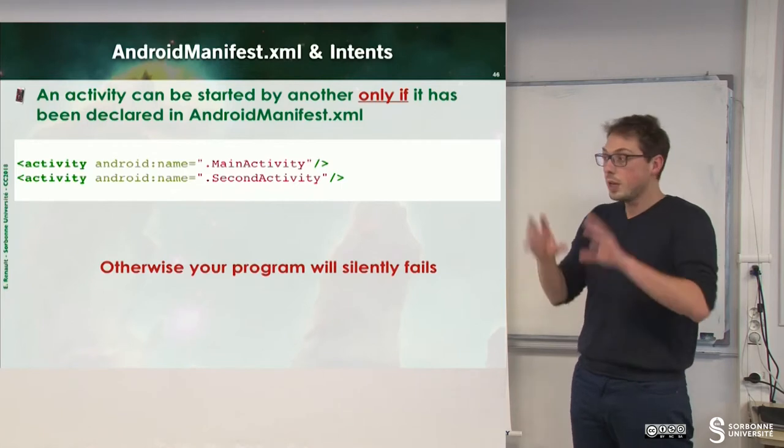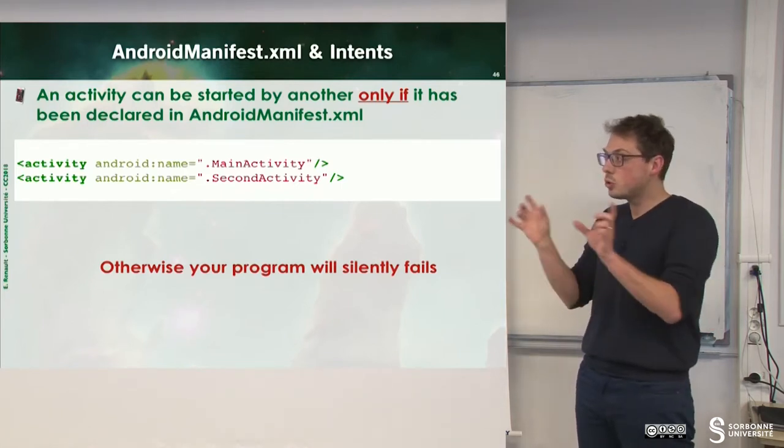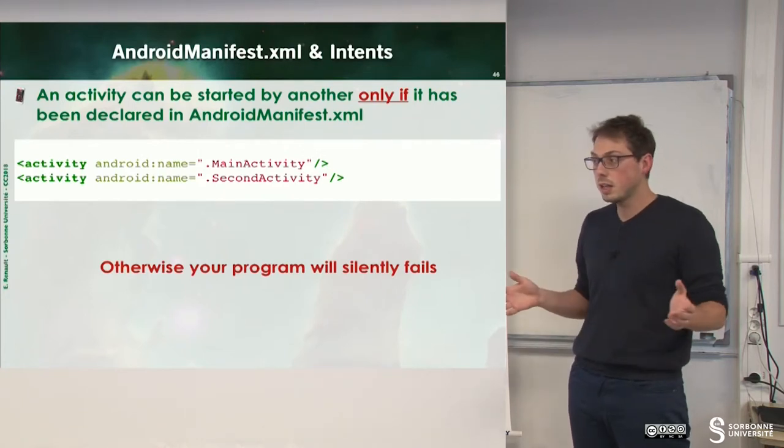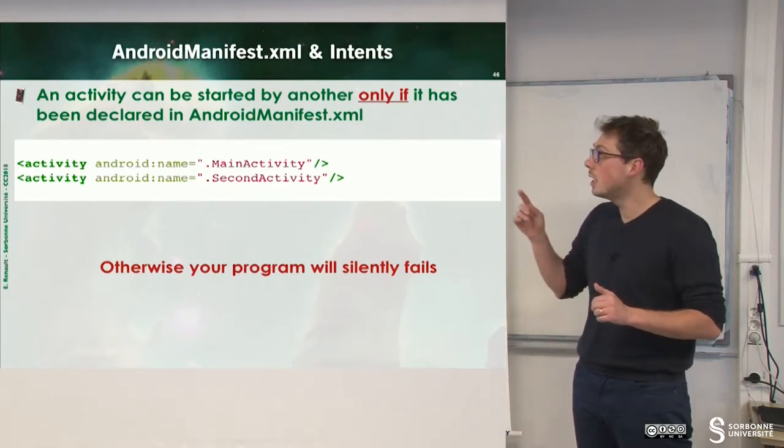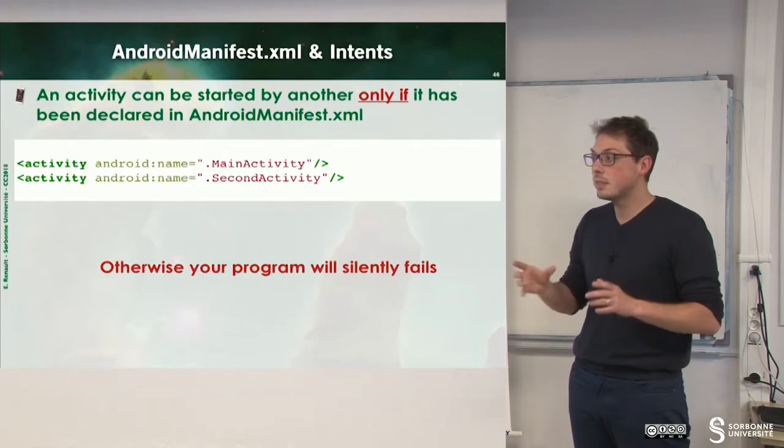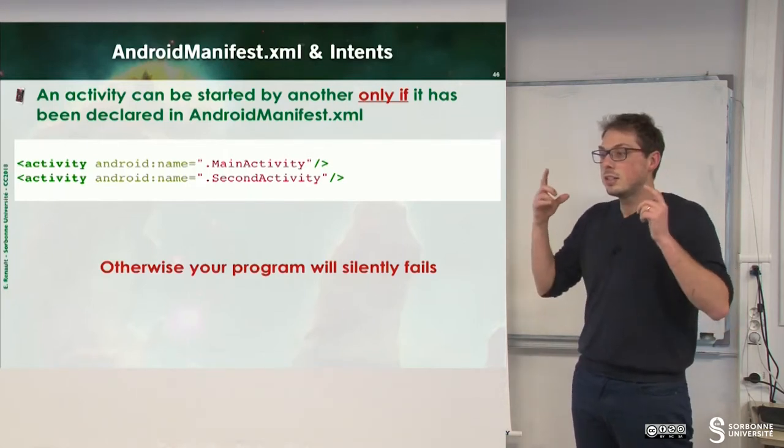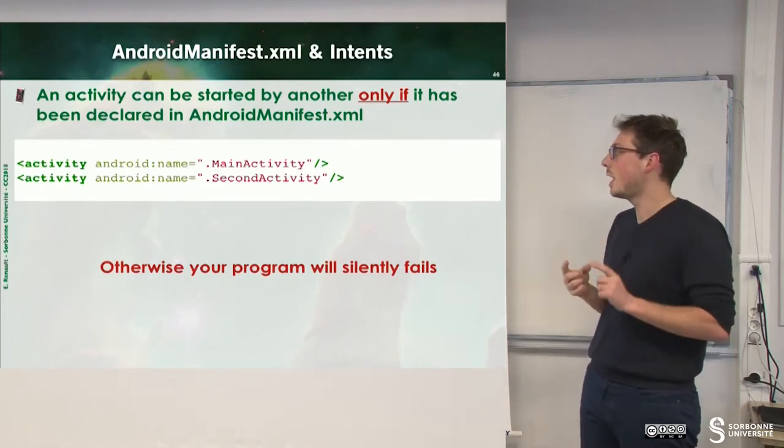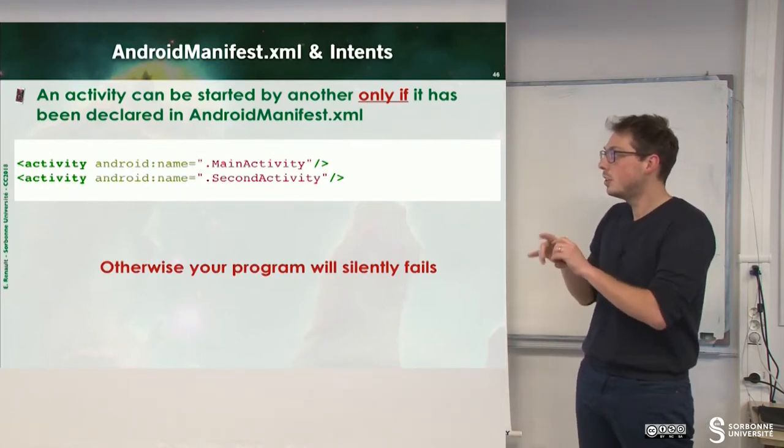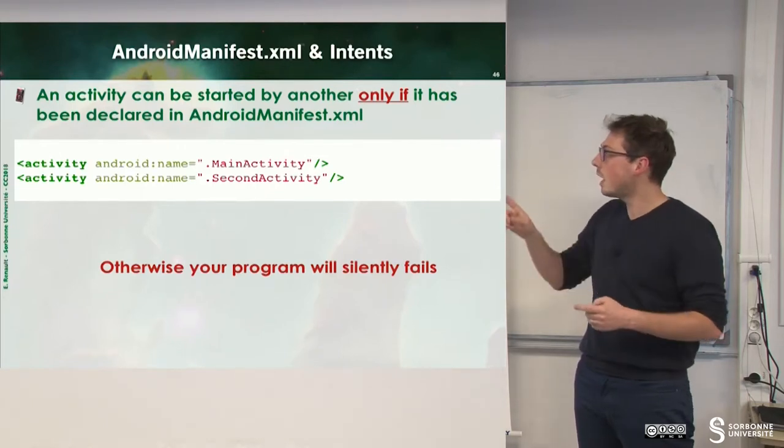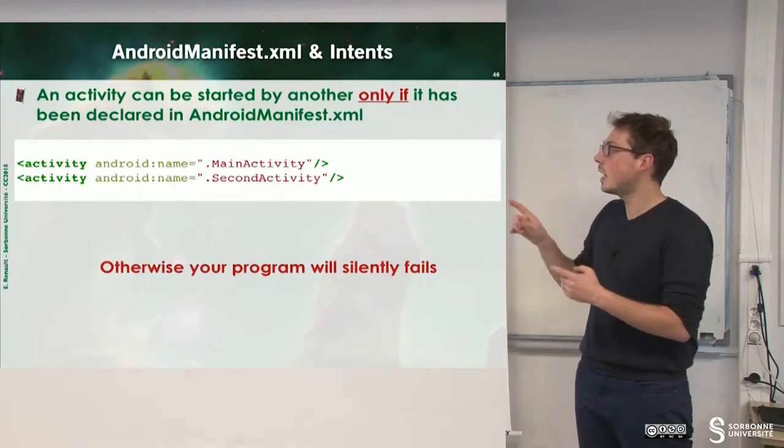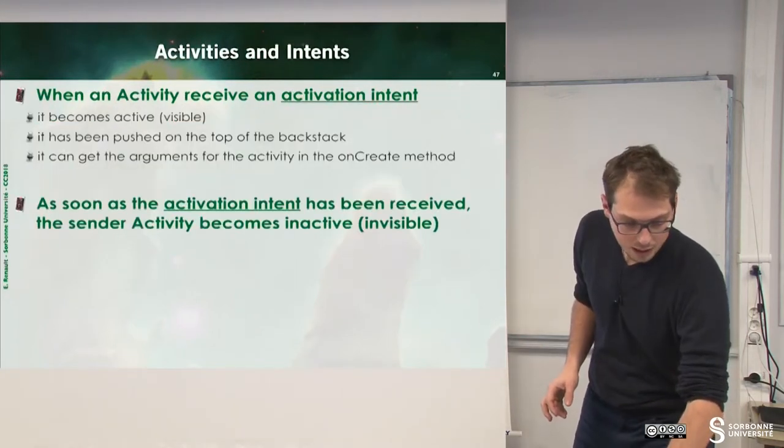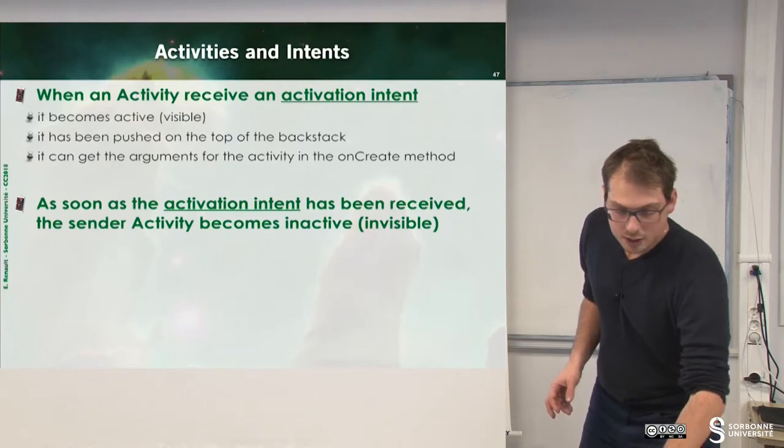We have two activities, we know how to switch, but if you run this example now, it will fail. Why? Because you didn't declare the activity inside of the Android manifest file. Once more, this is the most important file in your application. You just have to write two lines, activity main activity, activity second activity, and this is it.